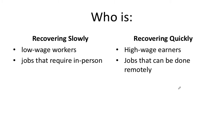In this particular recovery that we are in, there are some groups that are recovering very quickly and some groups that are recovering very slowly or have not recovered. One group that has recovered very quickly has been high wage earners — people who make a lot of money — compared to low wage workers who have not recovered as fast. One reason for this is that a lot of high wage jobs you're able to do remotely, from home, while a lot of low wage jobs require you to actually be there in person.